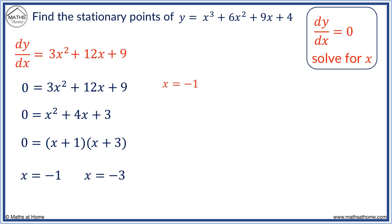To find the y coordinate when x equals minus 1, we substitute it into the original function. This can be evaluated to get y equals 0. There is a stationary point at x equals minus 1, y equals 0.